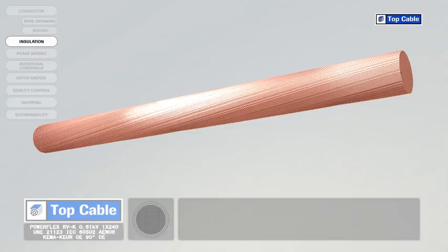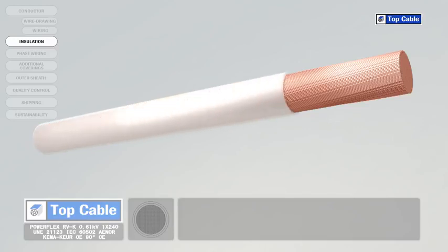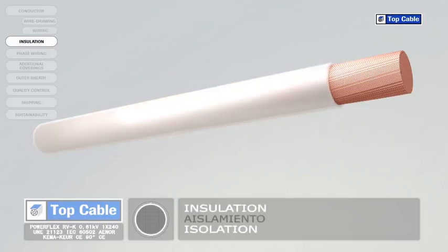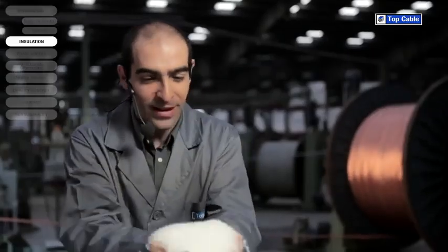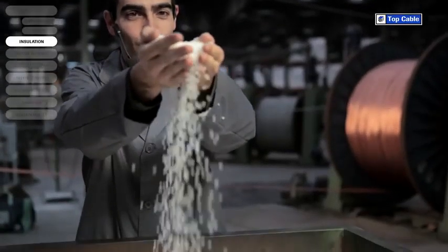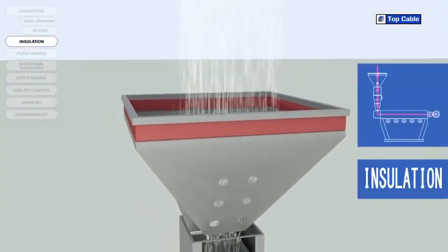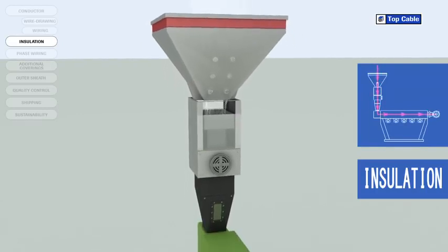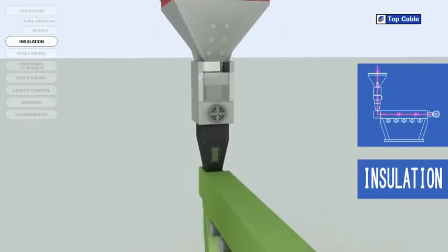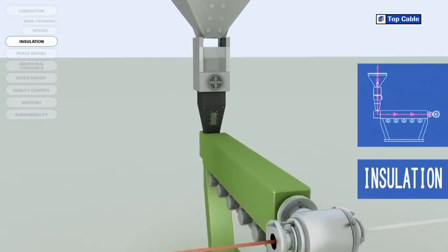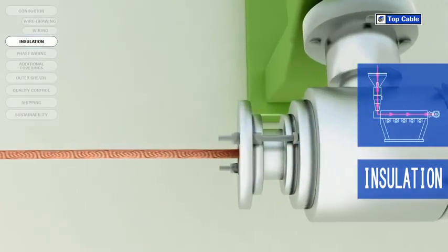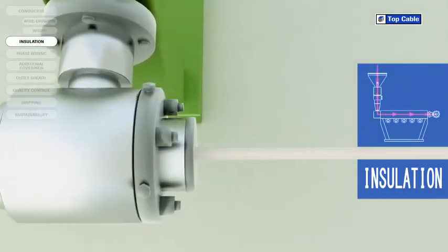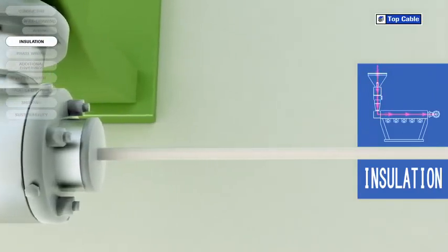The next process in the manufacture of electrical cables is the insulation. This is when we place an insulating cover over the conductor to prevent current leakages. The insulating material is added by a process of extrusion at high temperature. Several insulating materials may be used — PVC, EPR, XLPE, etc. Different insulation materials may be used depending on the characteristics of the cable required.